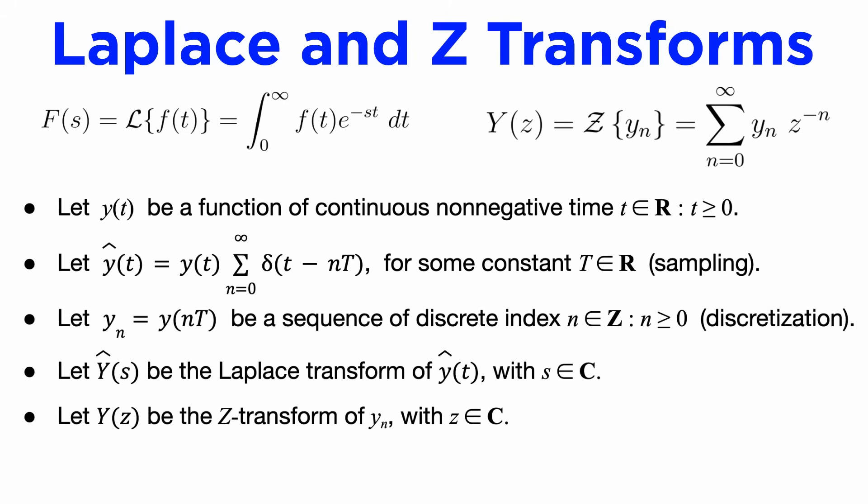If we compare the Laplace transform of y hat of t with the z-transform of y sub n, we find that they are identical, and the relationship between s and z is simply z equals e to the s capital T. This relationship explains why stability in the s domain allows s to be in the whole left plane, with negative real part, while stability in the z domain requires z to be within the unit circle, since all negative numbers get mapped to this circle under the transformation from s to e to the s capital T.